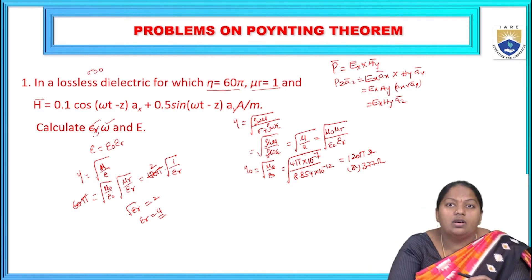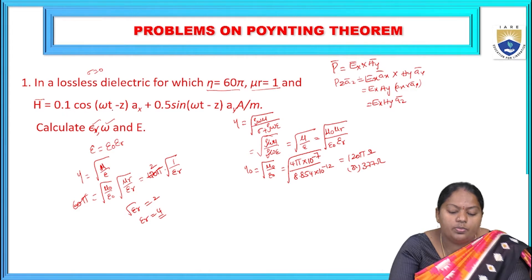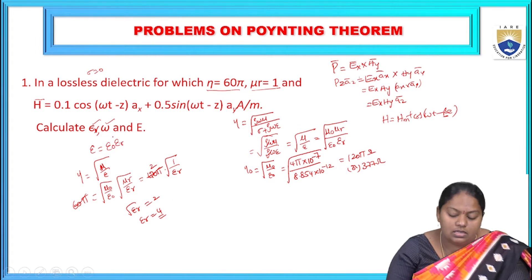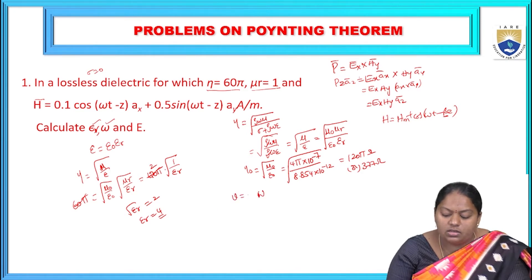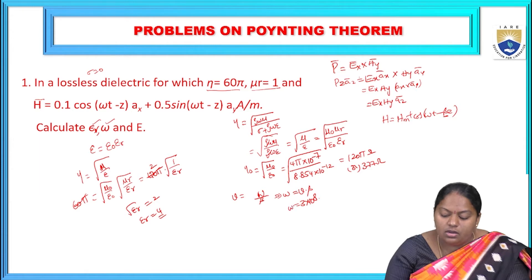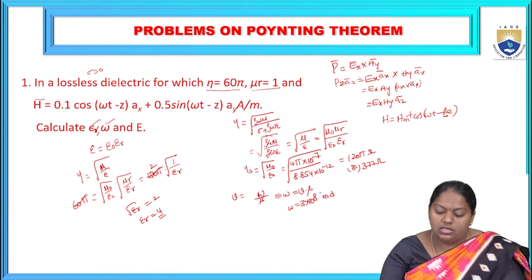Now we need to find omega. From H = 0.1 cos(ωt − βz), comparing with the general form H_m cos(ωt − βz), we see β = 1. Using velocity v = ω/β, and for a lossless dielectric medium v = 3×10⁸ m/s, we get omega = 3×10⁸ radians per second.